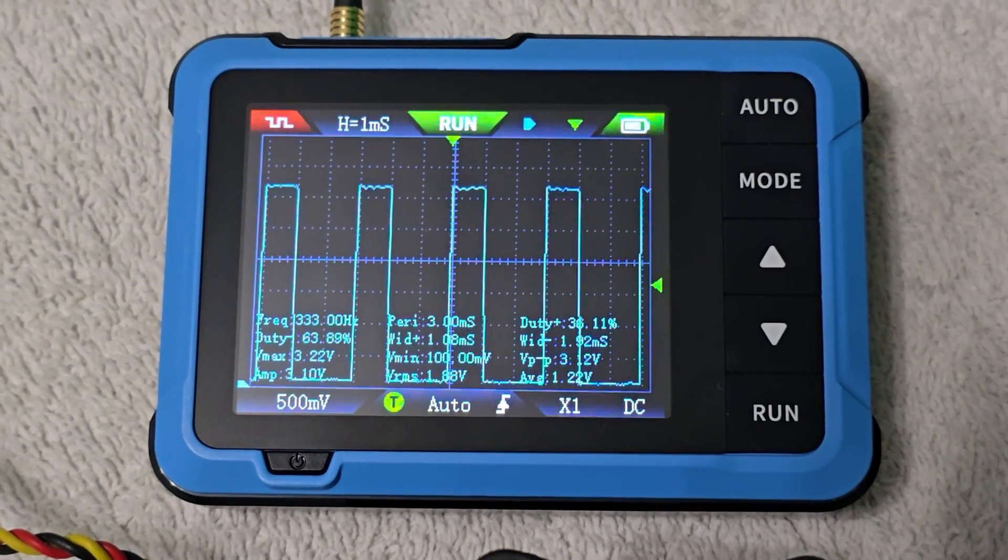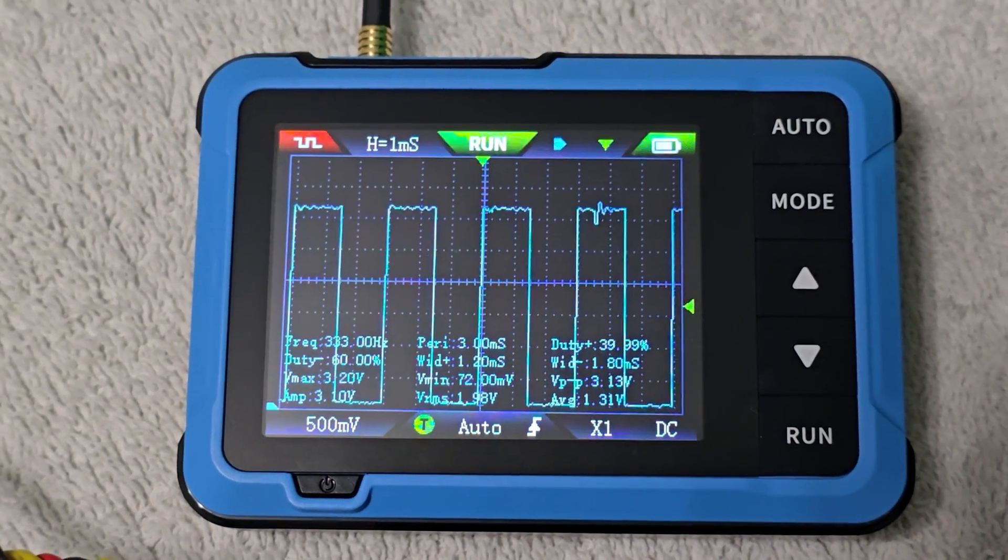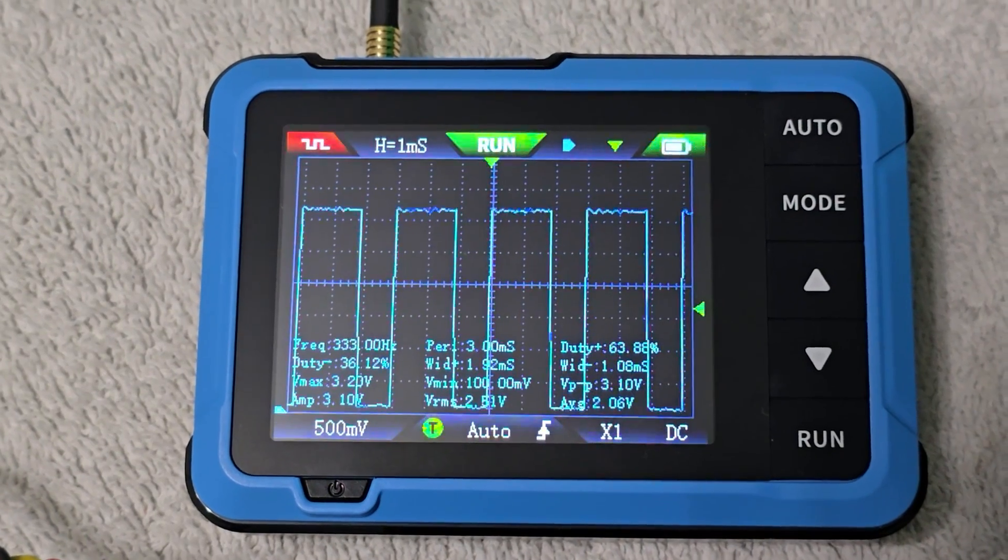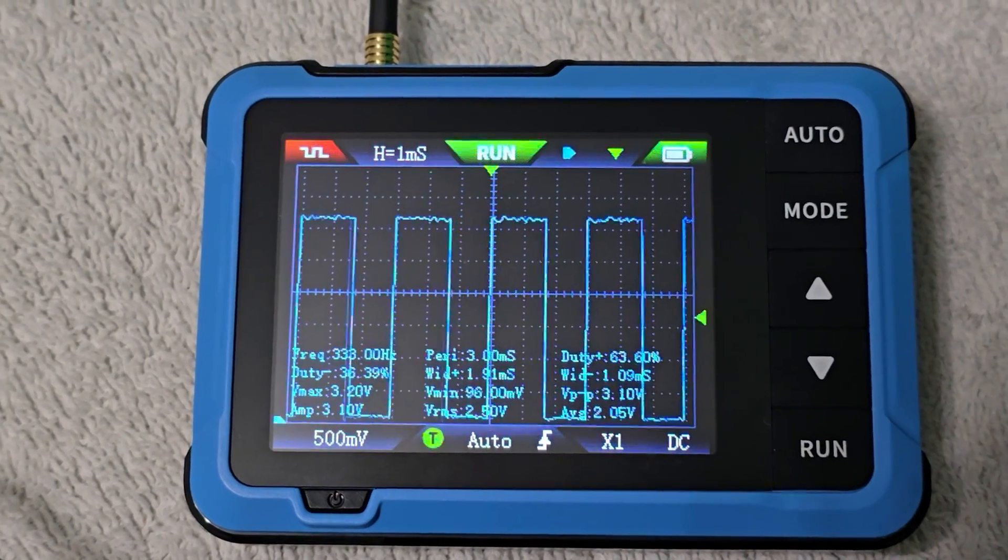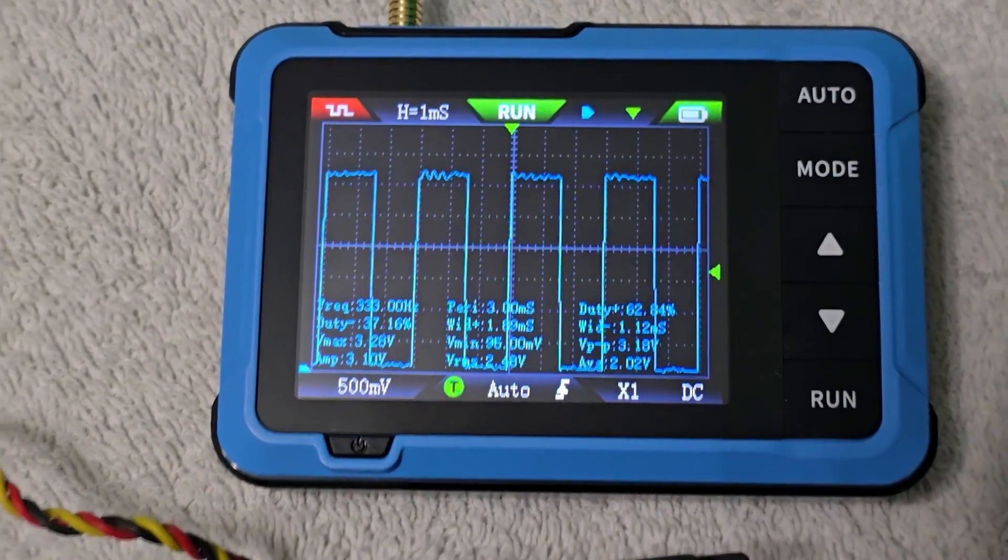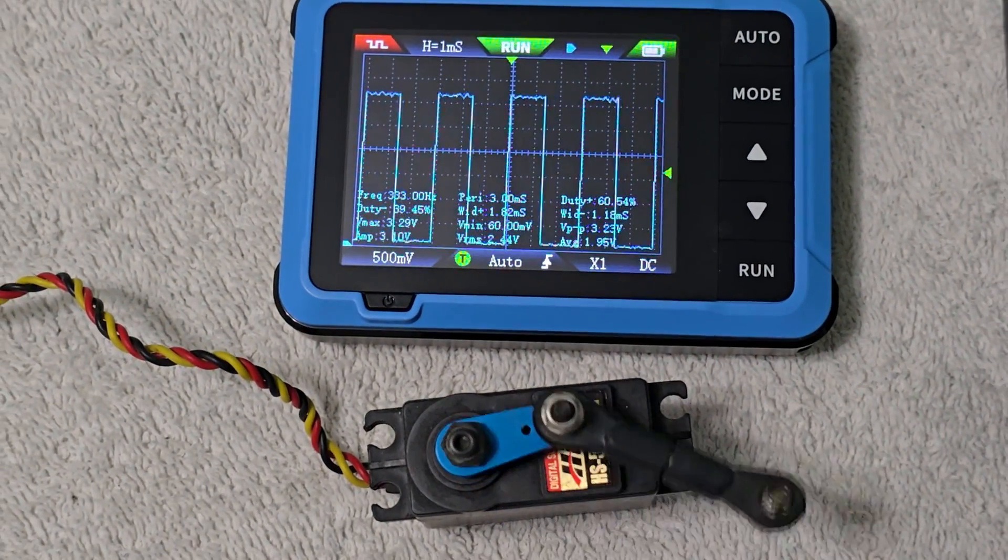You can see the width drops to 1.05, 1.08 milliseconds, and as we go the other way, we go up to 1.92. You can see the full range of the servo, and as we move it, this is exactly what's happening.